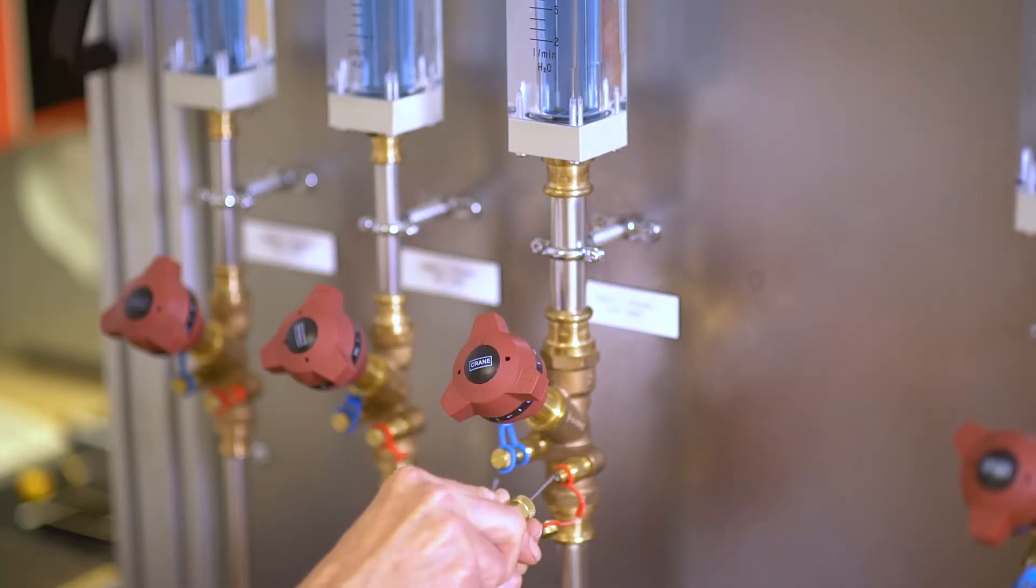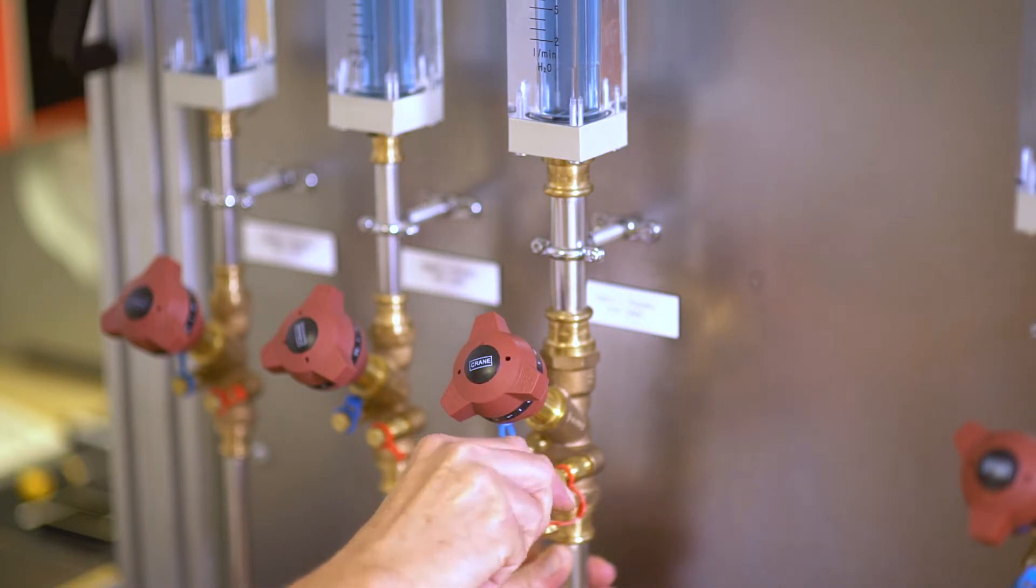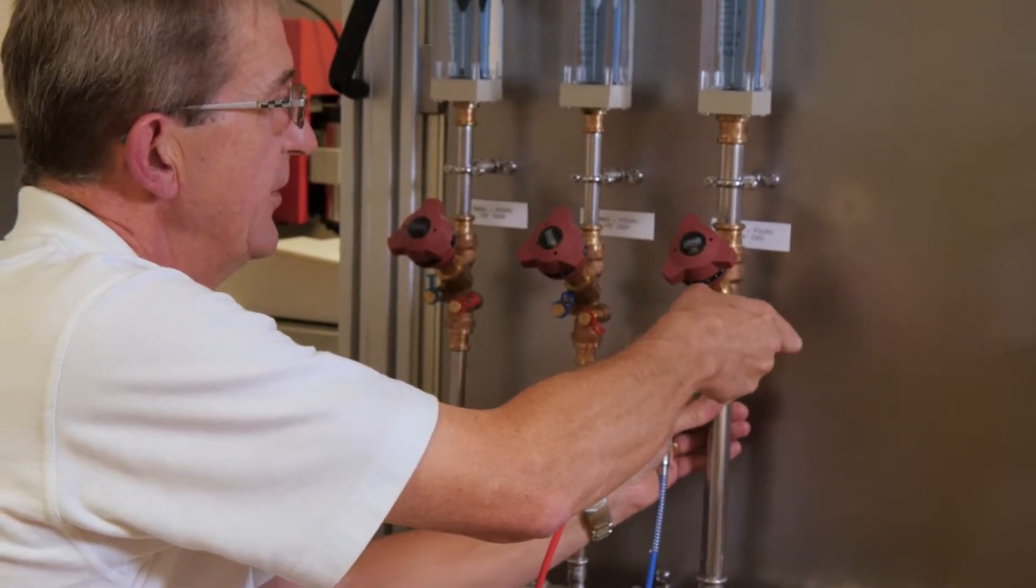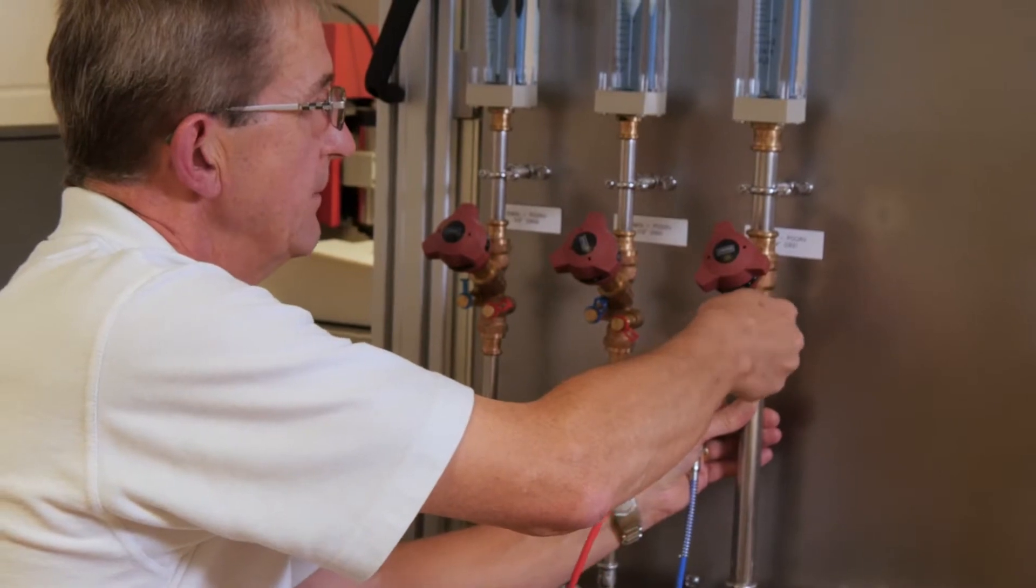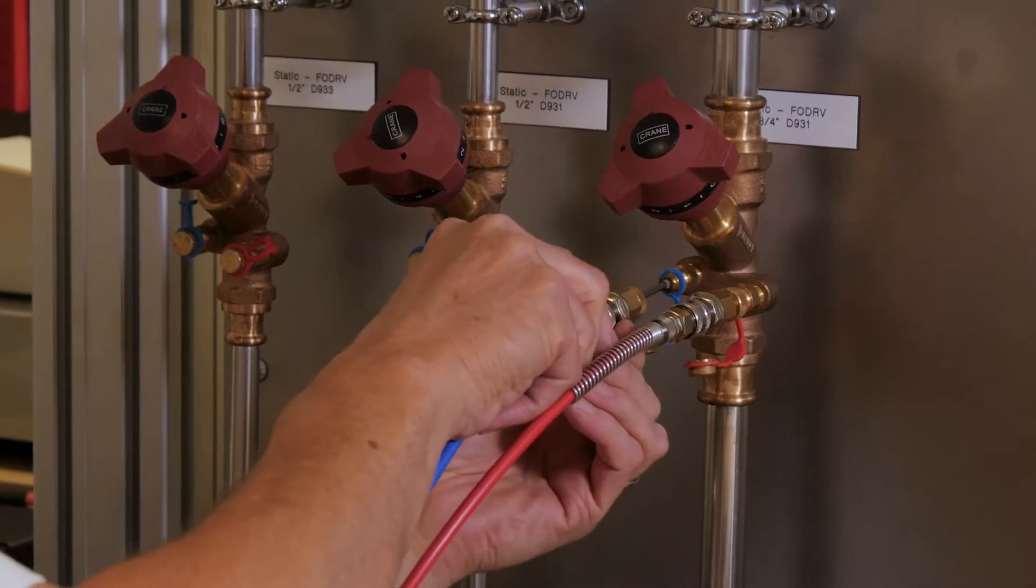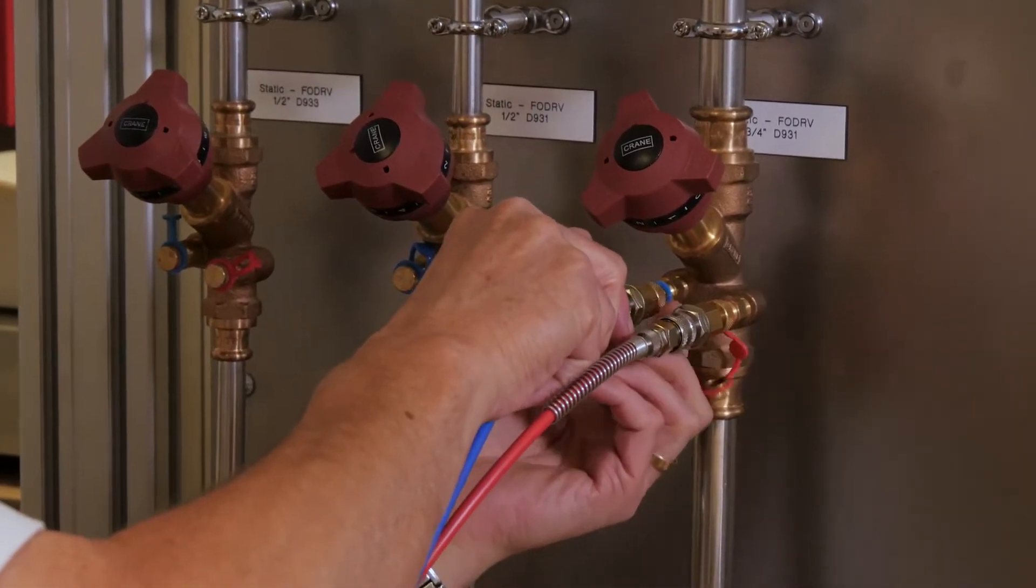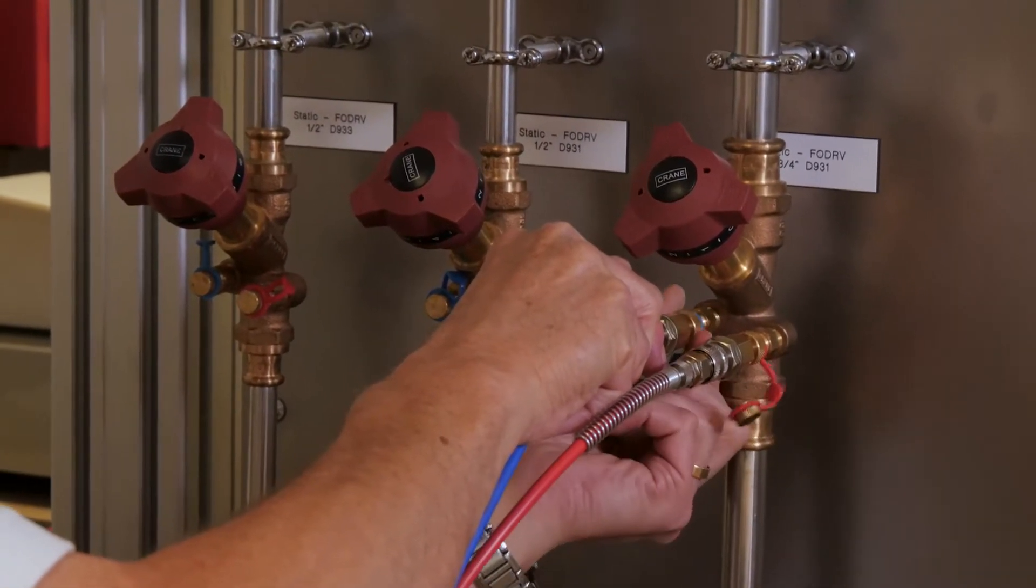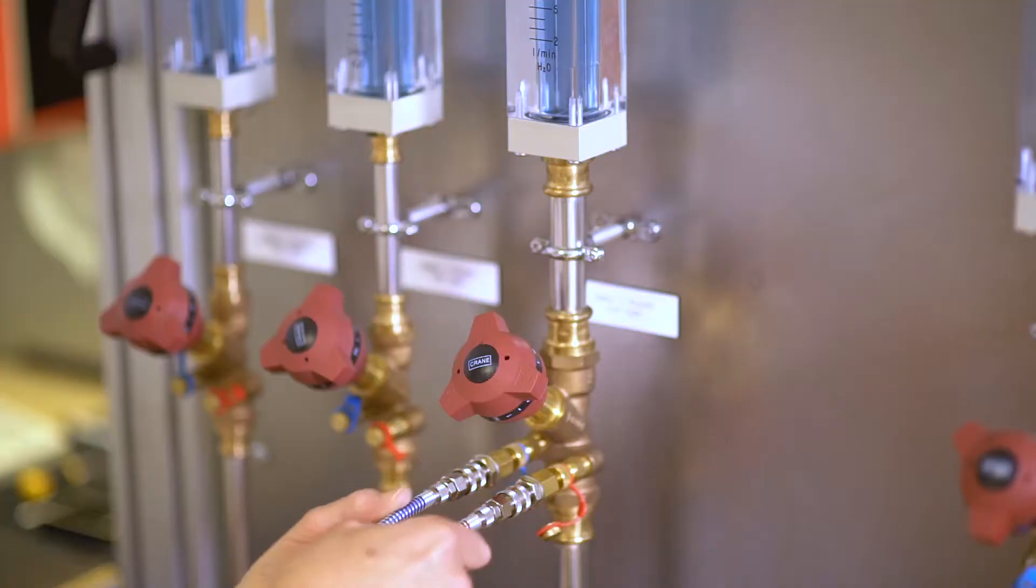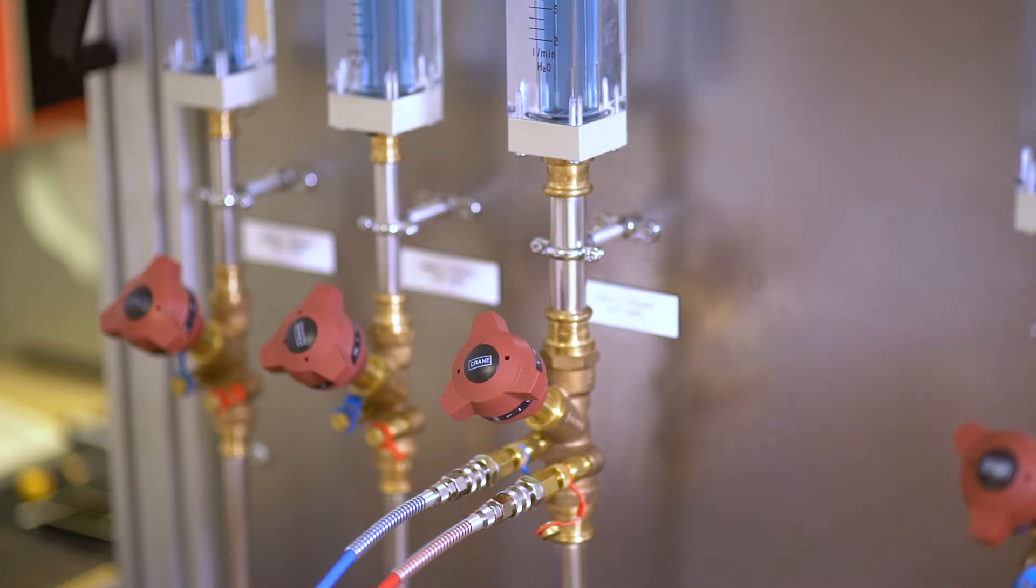So we'll fit the red one first, pass it in, feel it all the way home and then secure the test point with the threaded cap onto the valve. And the same with the blue. So the hoses are both connected now securely onto the valve and we're ready to go to the next stage.